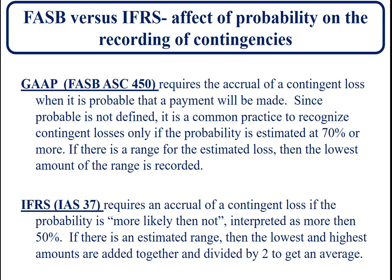The international standard has a different requirement for recording contingent liabilities. First, they have a lower threshold — all they require is that the likelihood is more than 50 percent. And if there is a range, you take the lowest and highest, add them together, and divide by two to get an average, and that is the amount that you record.